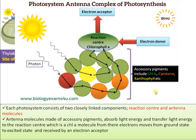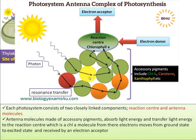Accessory pigments include chlorophyll B, carotene, xanthophyll, etc. The energy of sunlight or photons is received by these accessory pigments. The accessory pigments transfer this energy to adjacent pigment molecules by means of resonance transfer, which is a kind of vibratory transfer mechanism. Ultimately this energy is channeled into the reaction center chlorophyll A molecule.